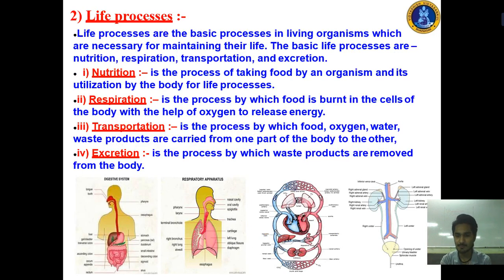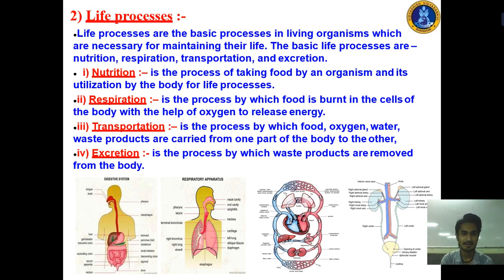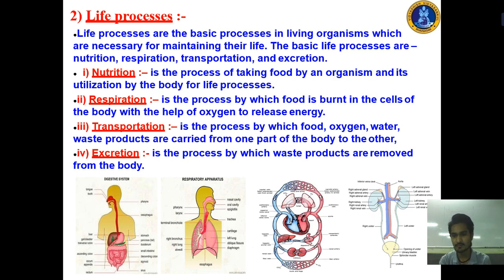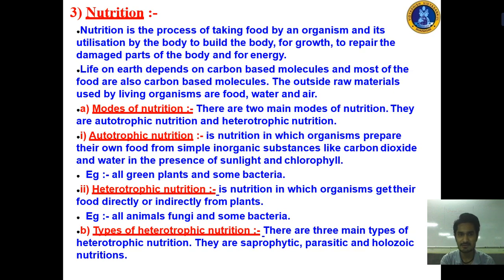After that we discussed what are life processes — the different types of life processes done in our body or by any organism. For example: nutrition, respiration, transportation, and excretion. In nutrition you take food and utilize it into energy. In respiration you breathe in and breathe out. In transportation, food, oxygen and water move from one part of the body to another. In excretion, waste like sweat and urine is removed from the body.